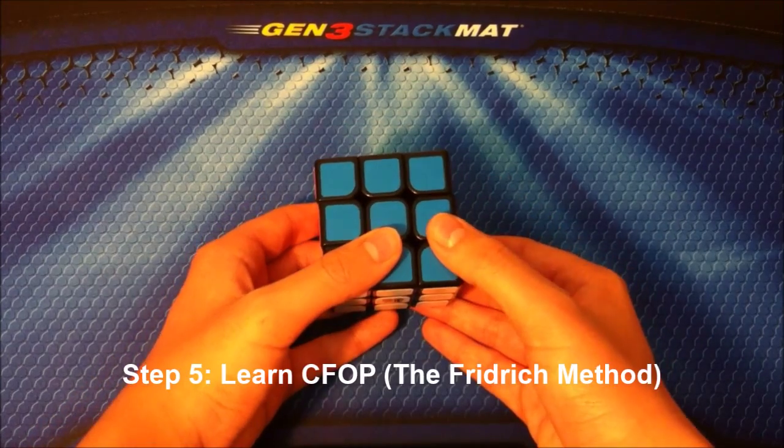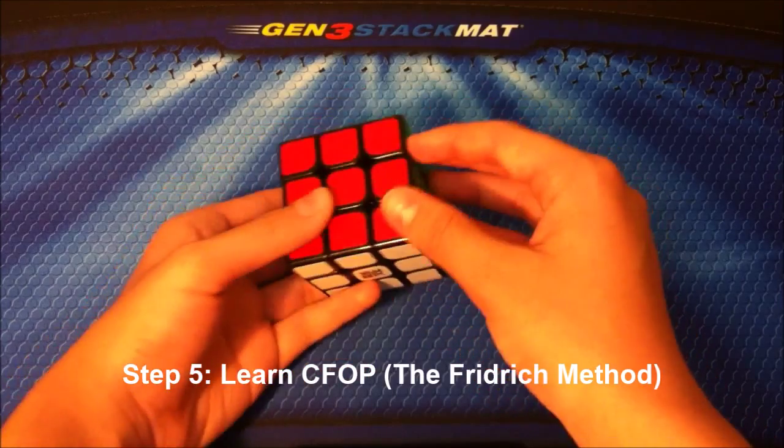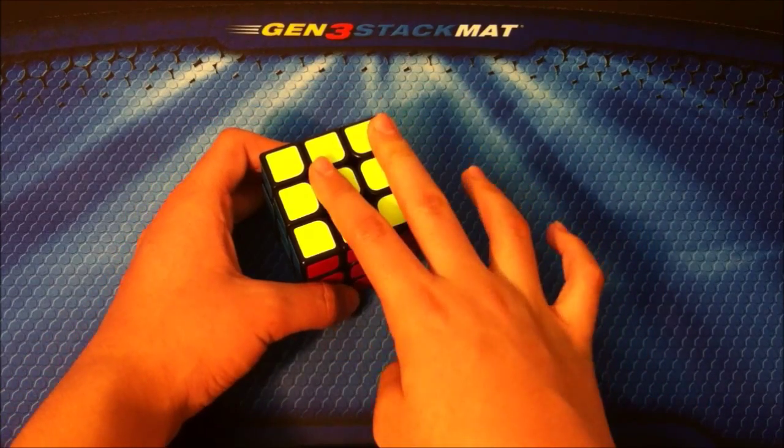Step five: learn CFOP. Make sure using cross on bottom, intuitive F2L, two-look OLL which is nine algorithms, and then two-look PLL which is six algorithms.